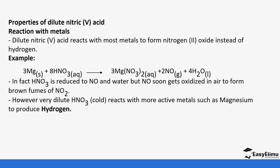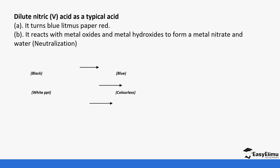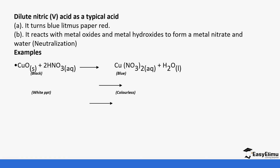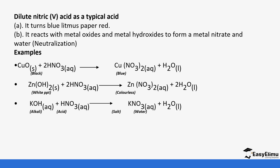However, very dilute cold nitric acid reacts with more active metals such as magnesium to produce hydrogen. Nitric acid also reacts just like a normal acid: it reacts with metal oxides to form a salt and water in a neutralization reaction. For example, copper oxide plus nitric acid forms copper nitrate and water; zinc hydroxide plus nitric acid forms zinc nitrate and water; and potassium hydroxide plus nitric acid forms potassium nitrate and water.